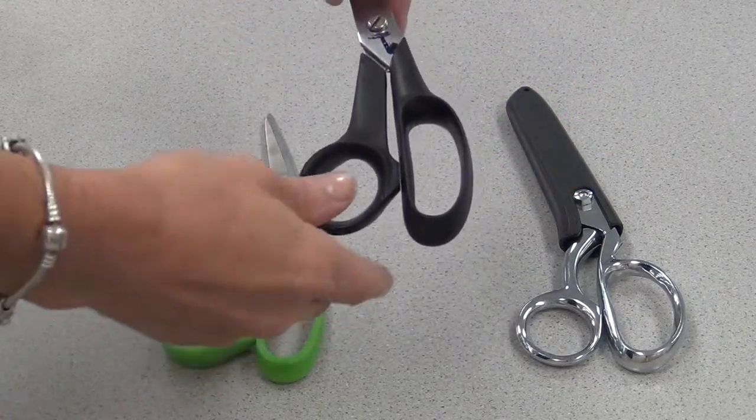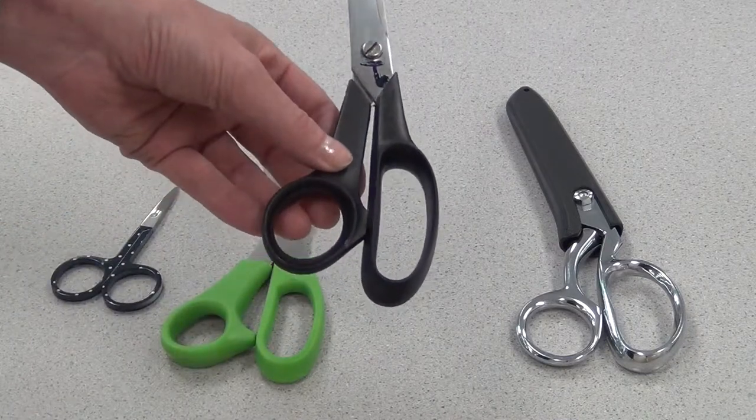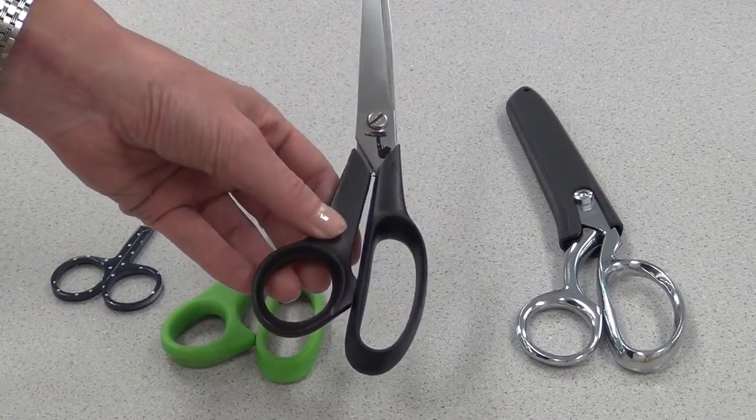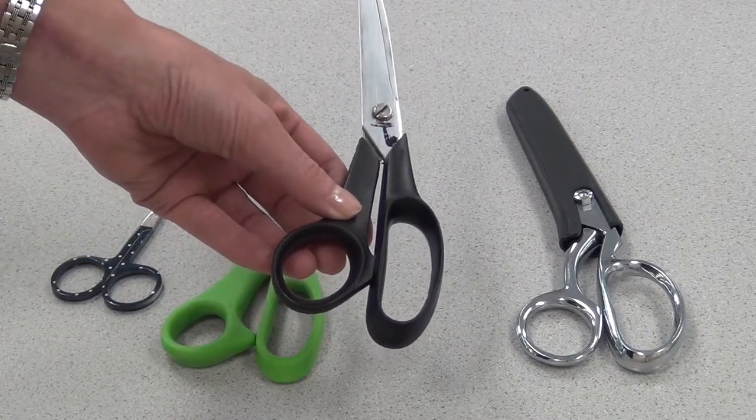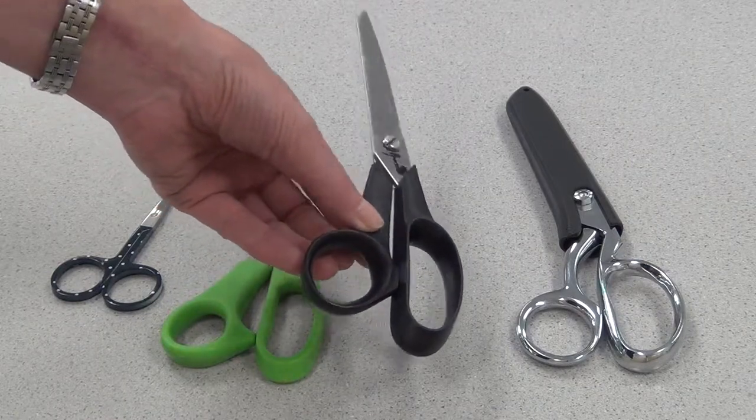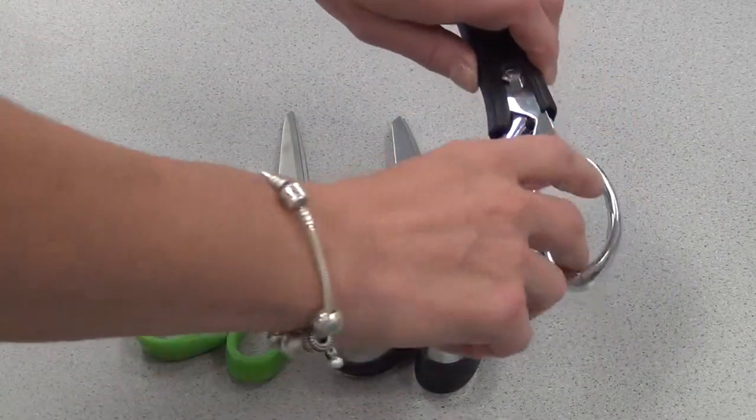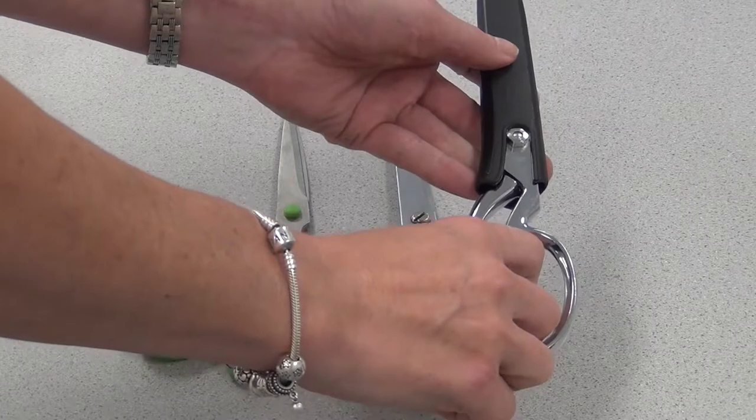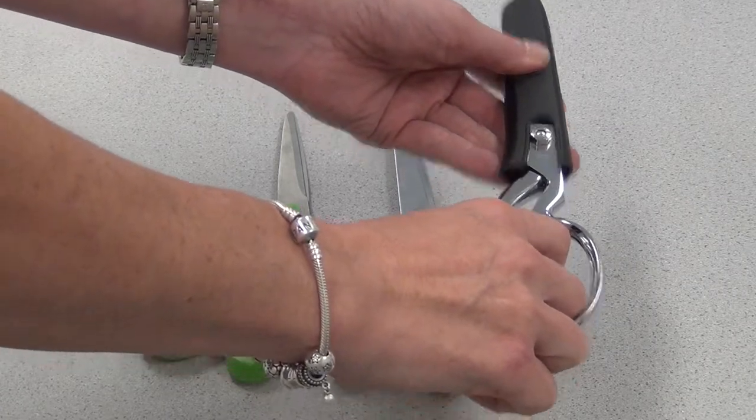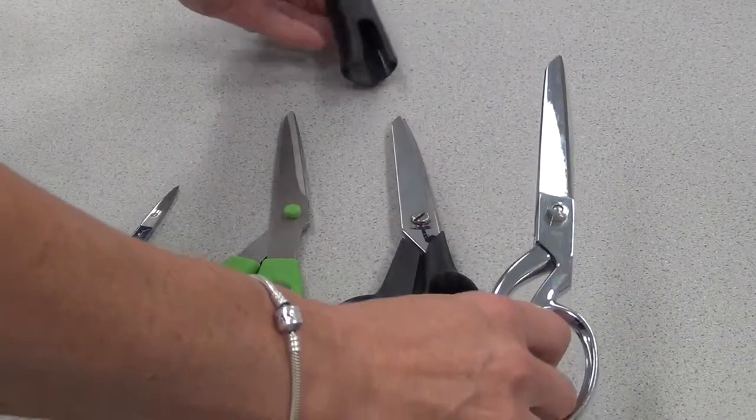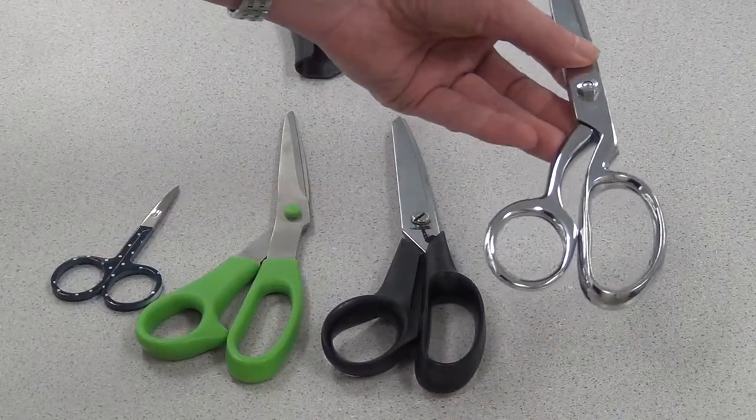The third are fabric scissors. These black handled scissors are great for light to medium weight fabrics and they should be kept with you at your machine at all times for cutting threads. And the last are the silver scissors, which have a black cover on them to keep them sharp. Make sure when you're finished with them you return the cover, and they are used for medium to heavy weight fabrics.